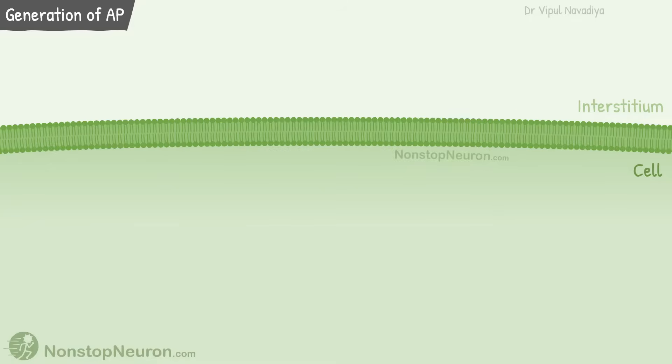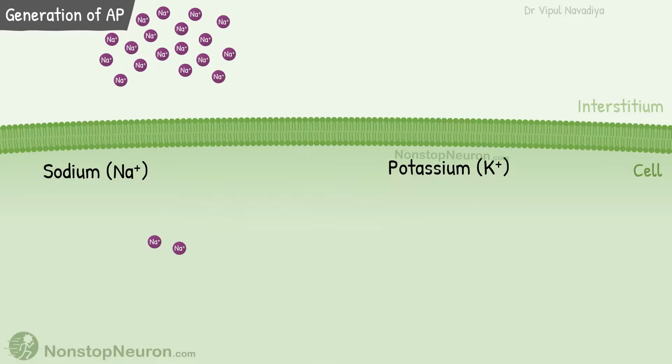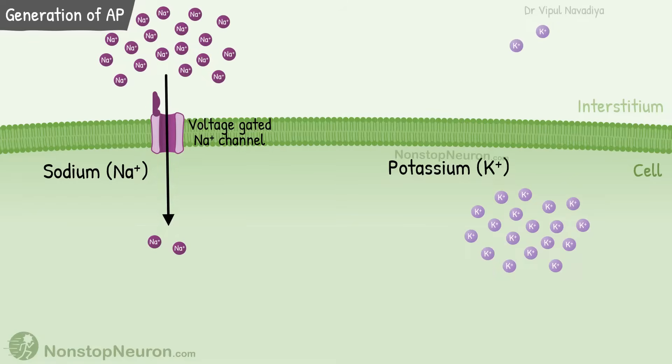First, let's talk about ions involved in action potential. These are sodium and potassium. We know that sodium concentration is higher outside the cell so they tend to diffuse into the cell. As far as action potential is concerned, this diffusion occurs through the voltage-gated sodium channels. Then we have potassium. Its concentration is higher inside the cell so it tends to diffuse out. And for that we have voltage-gated potassium channels.